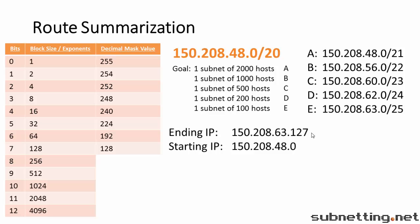To do this, we find the first octet that is different starting from the left — that's the third octet. Now we subtract the starting IP from the ending IP. 63 minus 48 equals 15. This is why we wrote the ending IP on top. Now we find the first power of 2 that is greater than 15 — note it's not greater than or equal to, it must be greater. And that is 16. Our subnet mask is going to be 240 in the third octet, which corresponds to slash 20. So our answer is we need a subnet mask of slash 20 to accommodate this range of IPs.